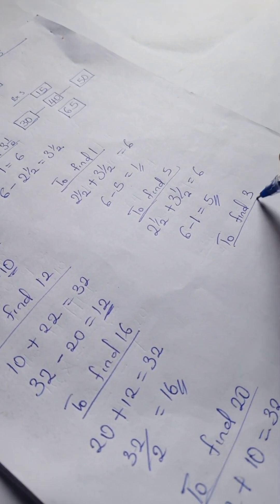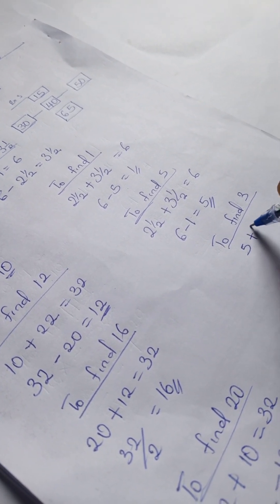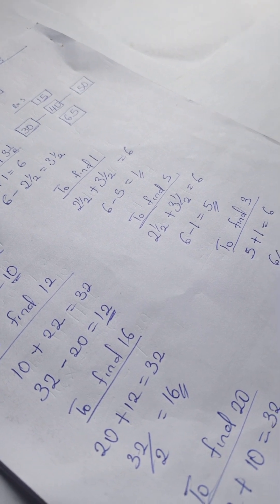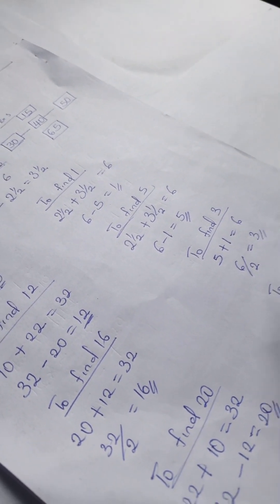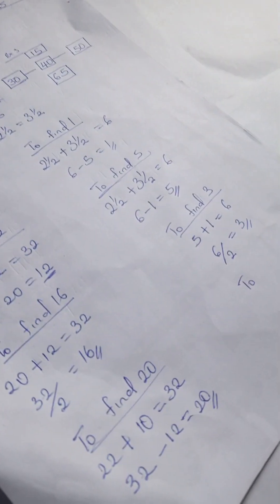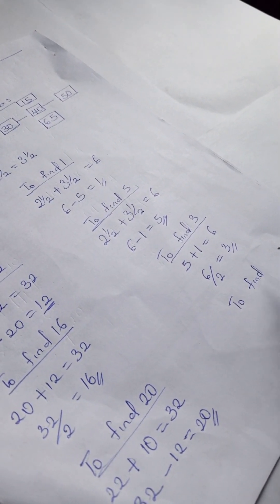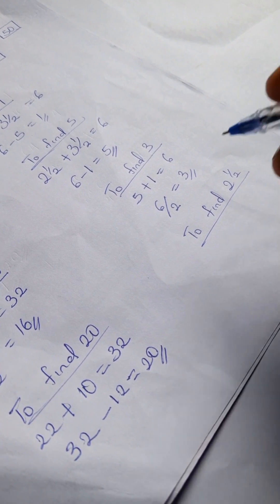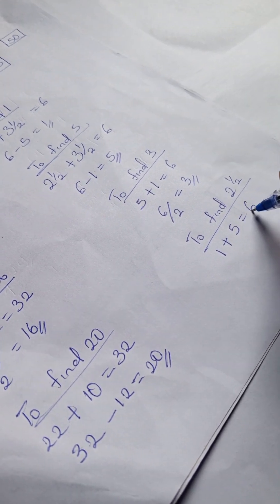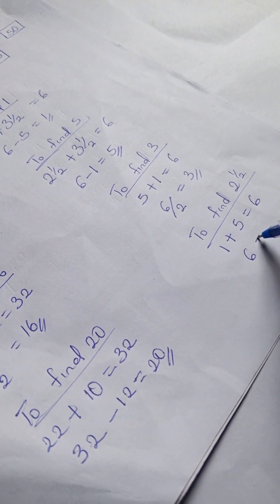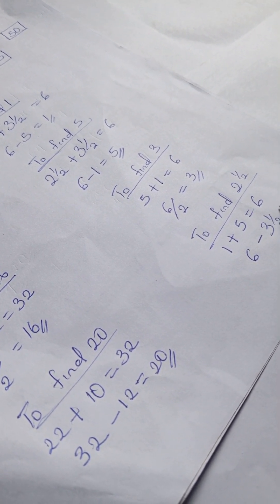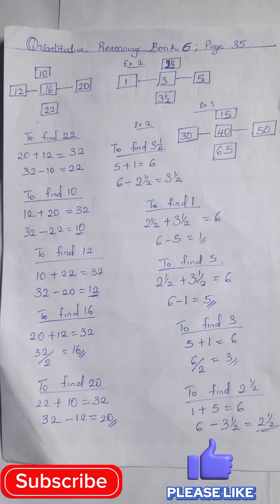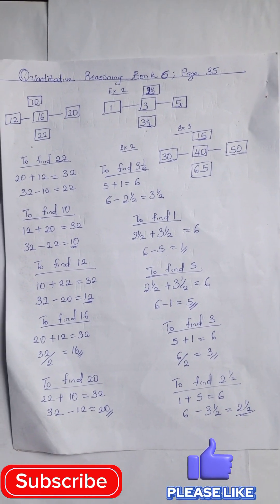To find 2 and a half, we have 1 plus 5 equals 6, and 6 minus 3 and a half gives us 2 and a half. Don't forget to like and subscribe to this channel for more quantitative reasoning solutions and mathematics problems.